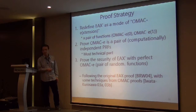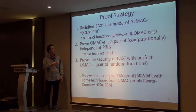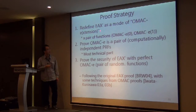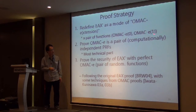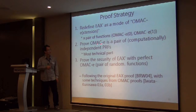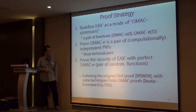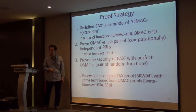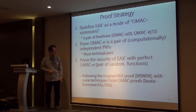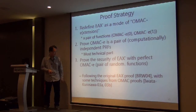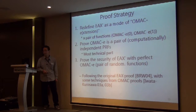The proof strategy is as follows. First, we redefine EAX prime as a mode of OMAC extension, which is a pair of functions denoted OMAC_E(0) and OMAC_E(1). We then prove that OMAC_E is a pair of computationally independent pseudo-random functions, which is the most technical part. Finally, we prove the security of EAX prime with a perfect OMAC extension, meaning a pair of random functions. The overall proof follows the original EAX proof by Bellare, Rogaway, and Wagner, with extensions from the OMAC proofs by Iwata and Kurosawa.